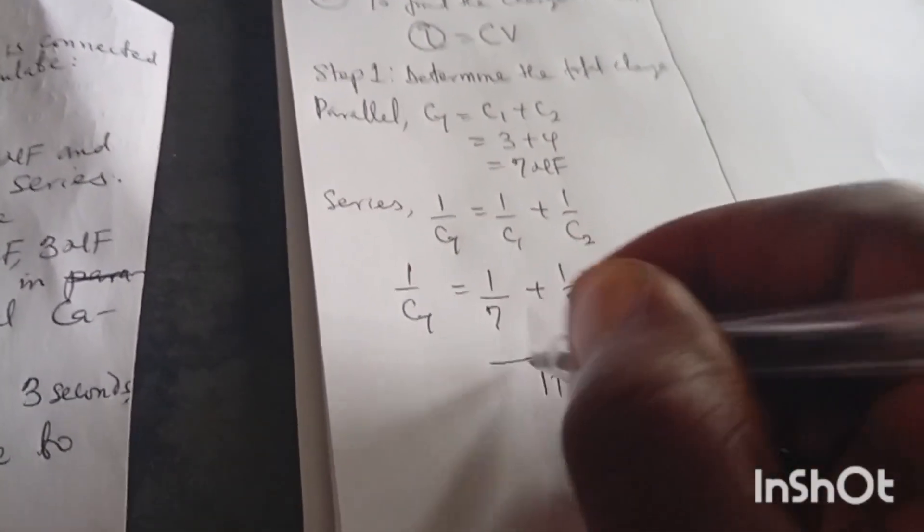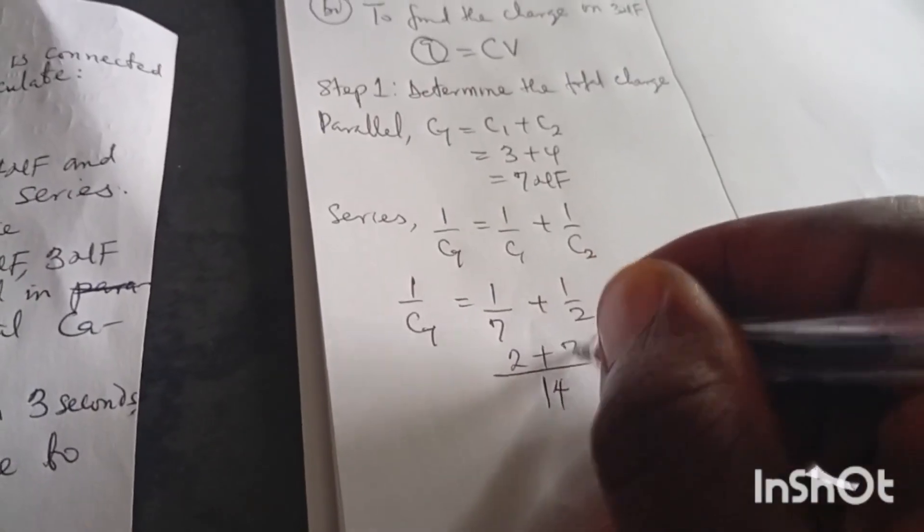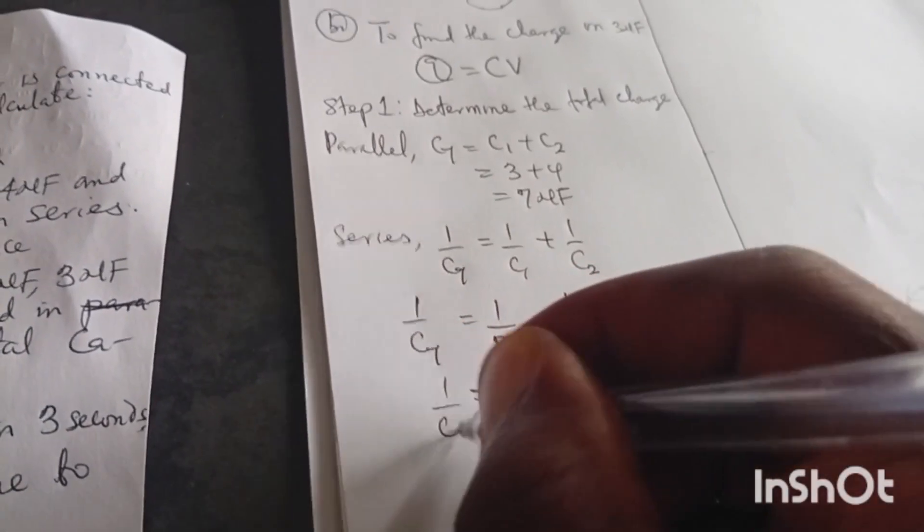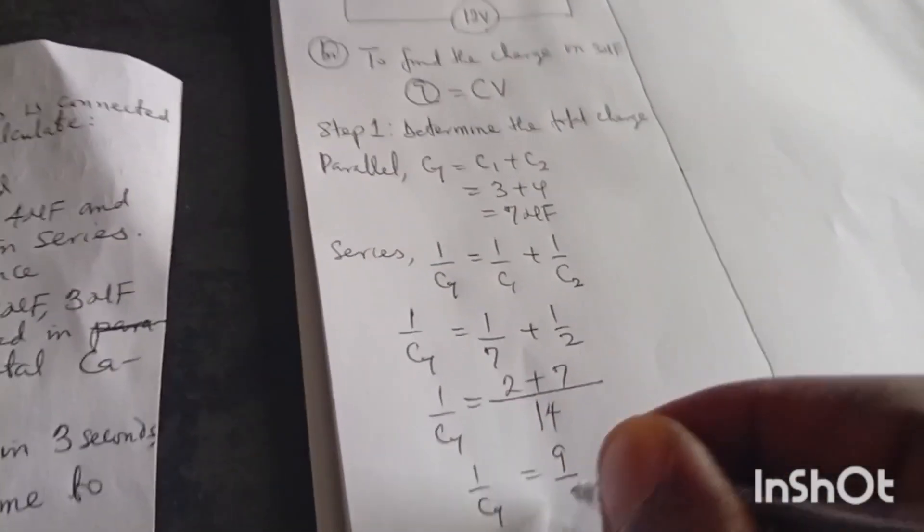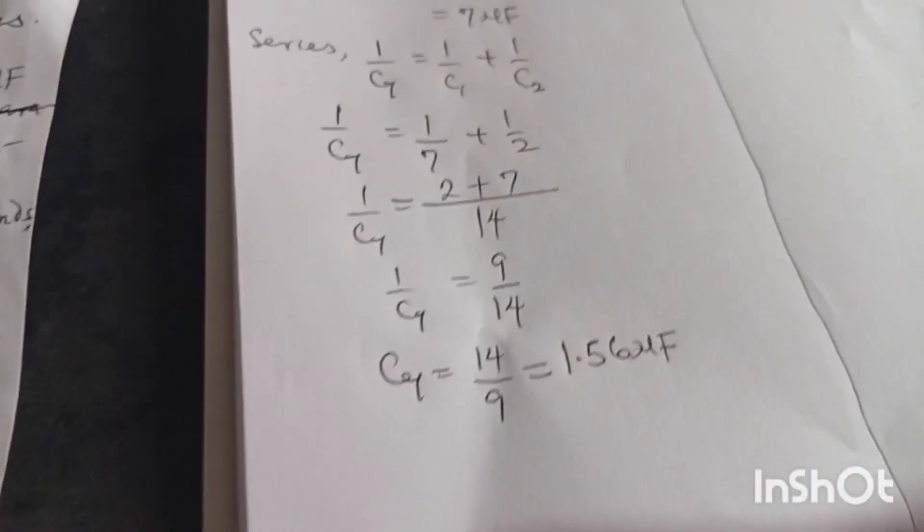So 14, 7 to 7. I have 1 over C total. So 1 over C total equals to 9 over 14. But you turn the inverse, I'll be having C total equals to 14 over 9. With the aid of calculator, I will be having 1.56 microfarad. Now you can see I have not touched my microfarad, I will not touch it.